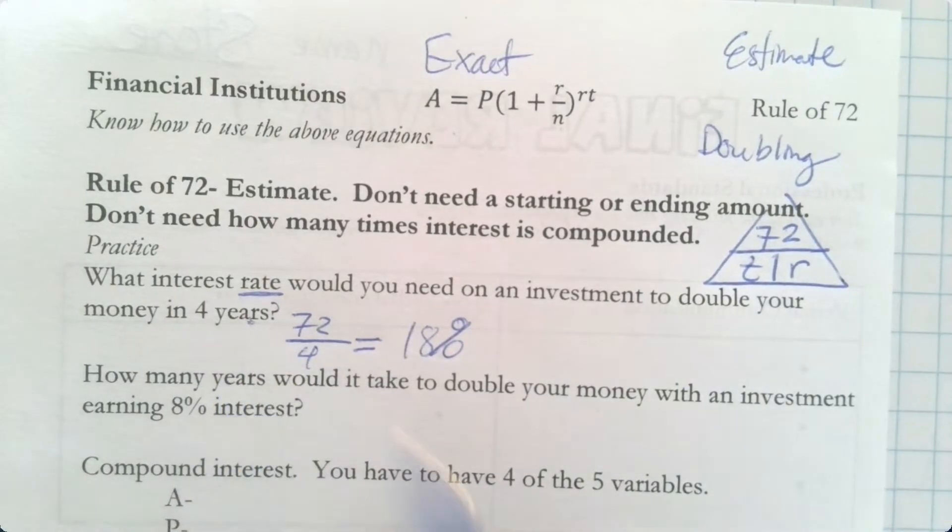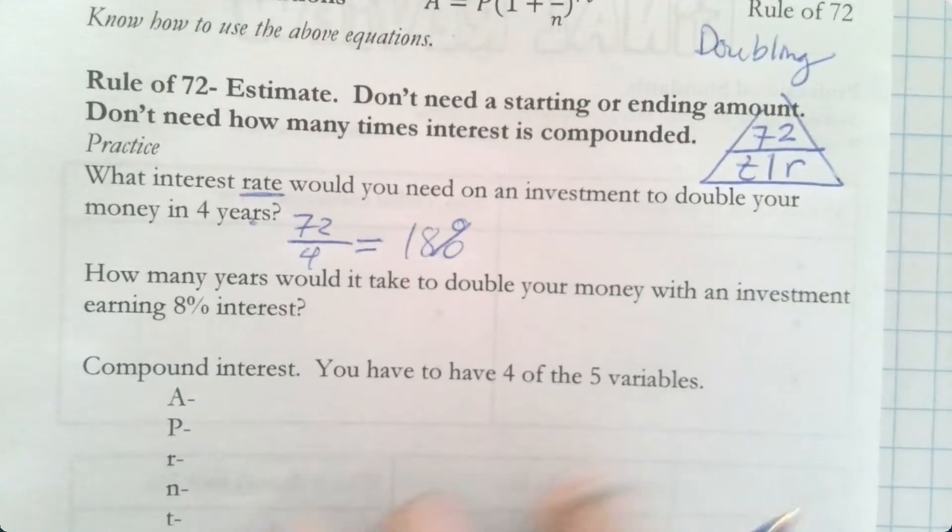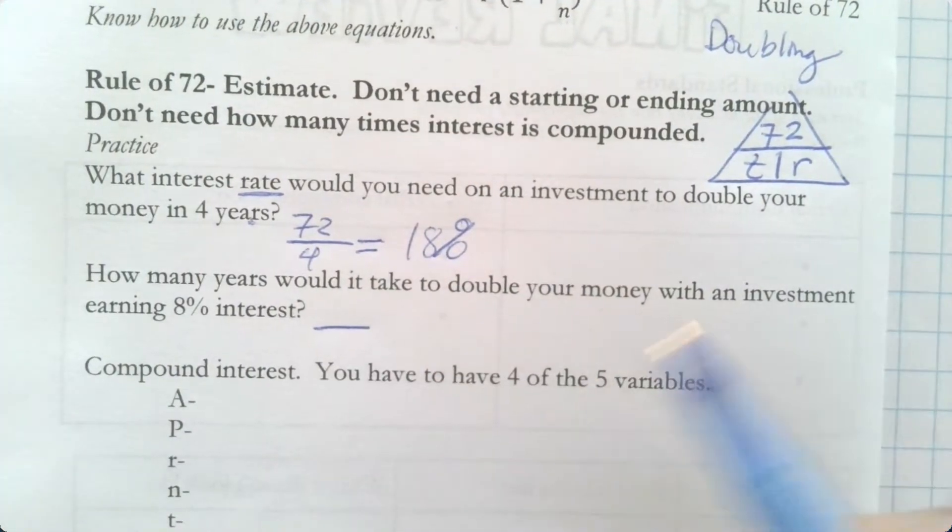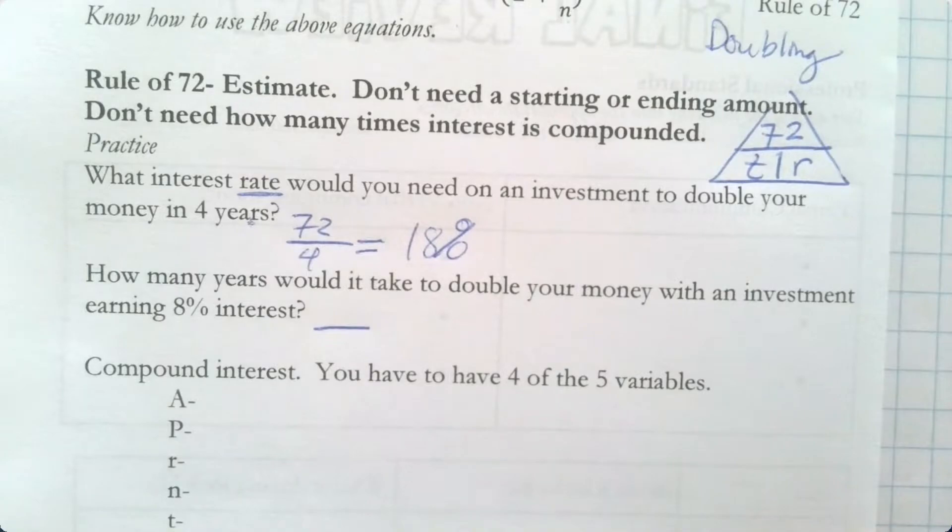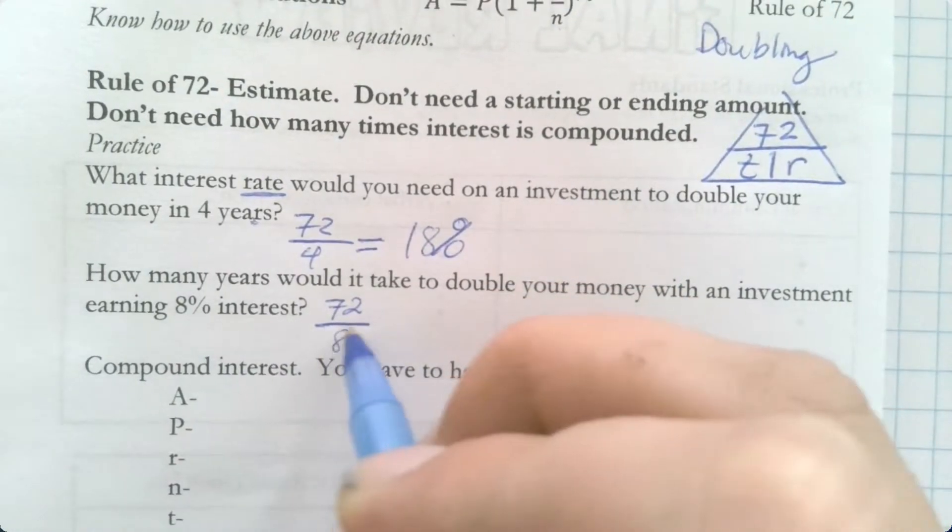What did you guys get? Good, so it's going to be 18. What? Nope, it's a rate, so it's going to be percent. We want to know what the rate would be, right? What if I had 8% interest? What goes on top? What goes on the bottom? What's it equal?